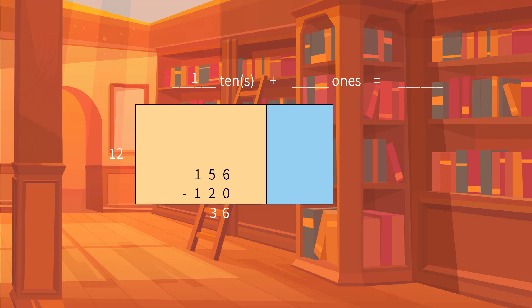We got the remainder 36. Then, we write it below 120 and in the next block.